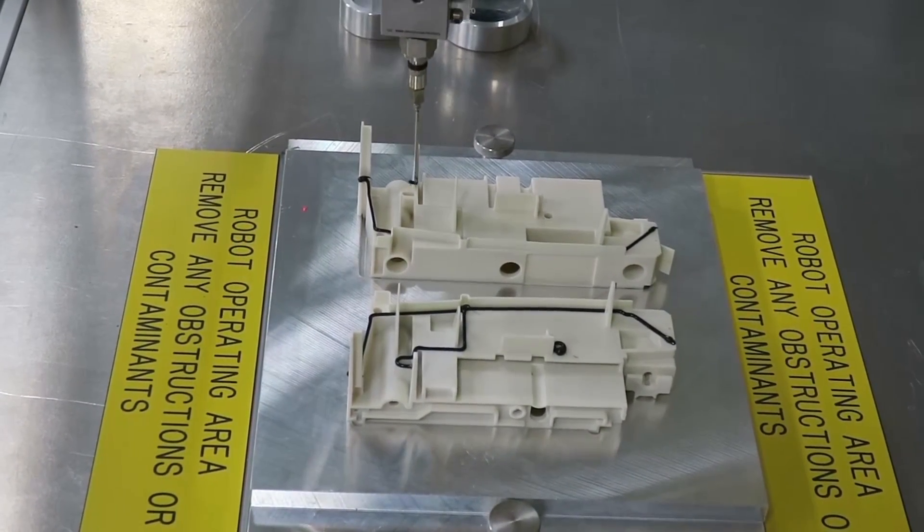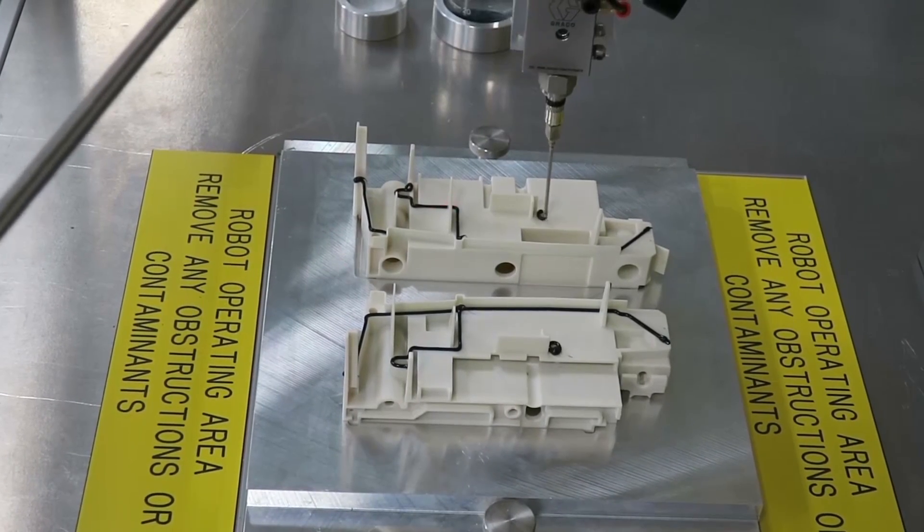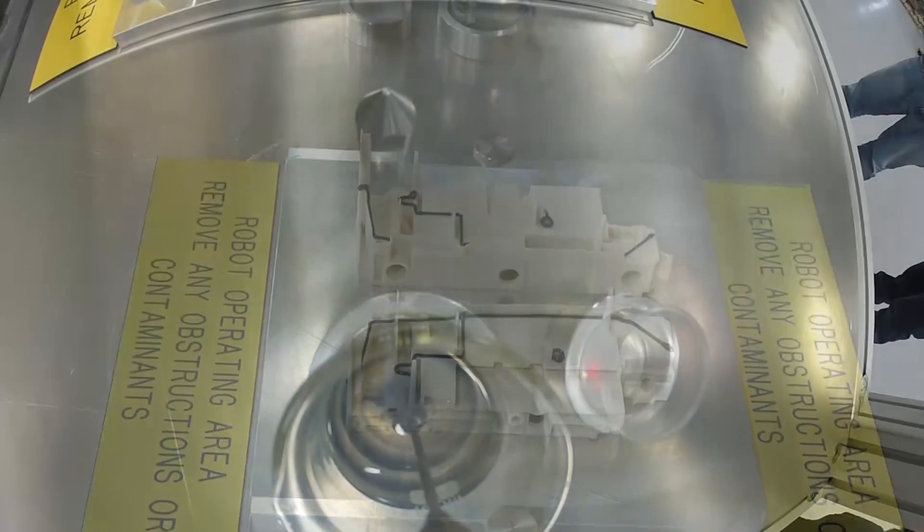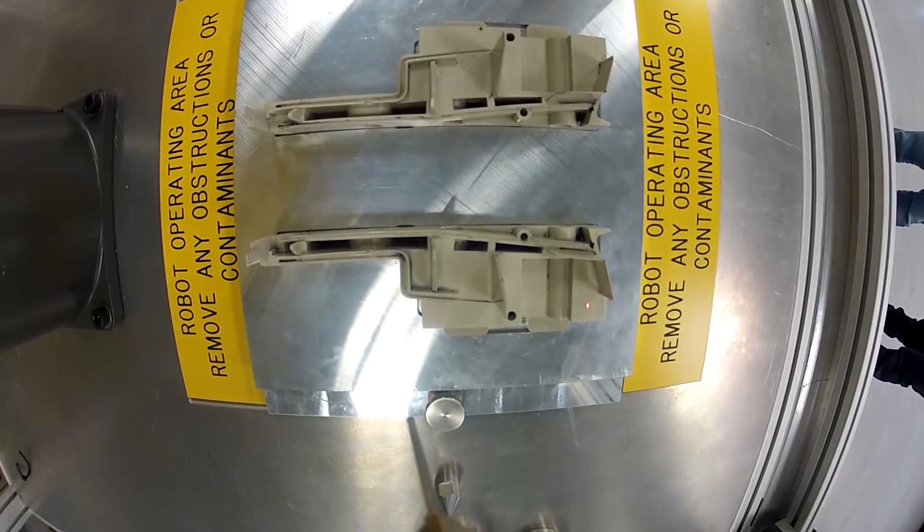The Fanuc LR Mate 200ID robot moves to the nest approach point. Mineral water is used to prevent the needle tip from drying out. The robot then moves to the laser approach point.